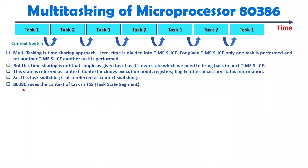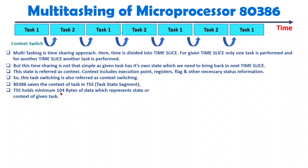The context of a task is stored in the TSS — Task State Segment. We have one TSS task state segment in which we load the context. Context holds information regarding the execution point, registers, and flags — many details are stored there. With the 80386, the minimum size of the context will be 104 bytes; it can be greater than that, but the minimum size is 104 bytes. These bytes are loaded inside the TSS — Task State Segment.